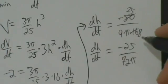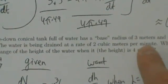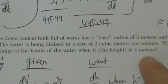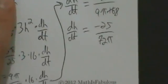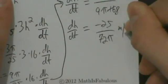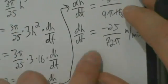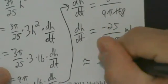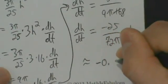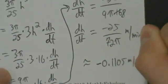What are the units? Going back to the problem: it's meters per minute. The volume is decreasing at cubic meters per minute, so dH/dt — the height — has units of meters per minute. So our answer is dH/dt equals negative 25/(72π) meters per minute, which approximates to about negative 0.1105 meters per minute.